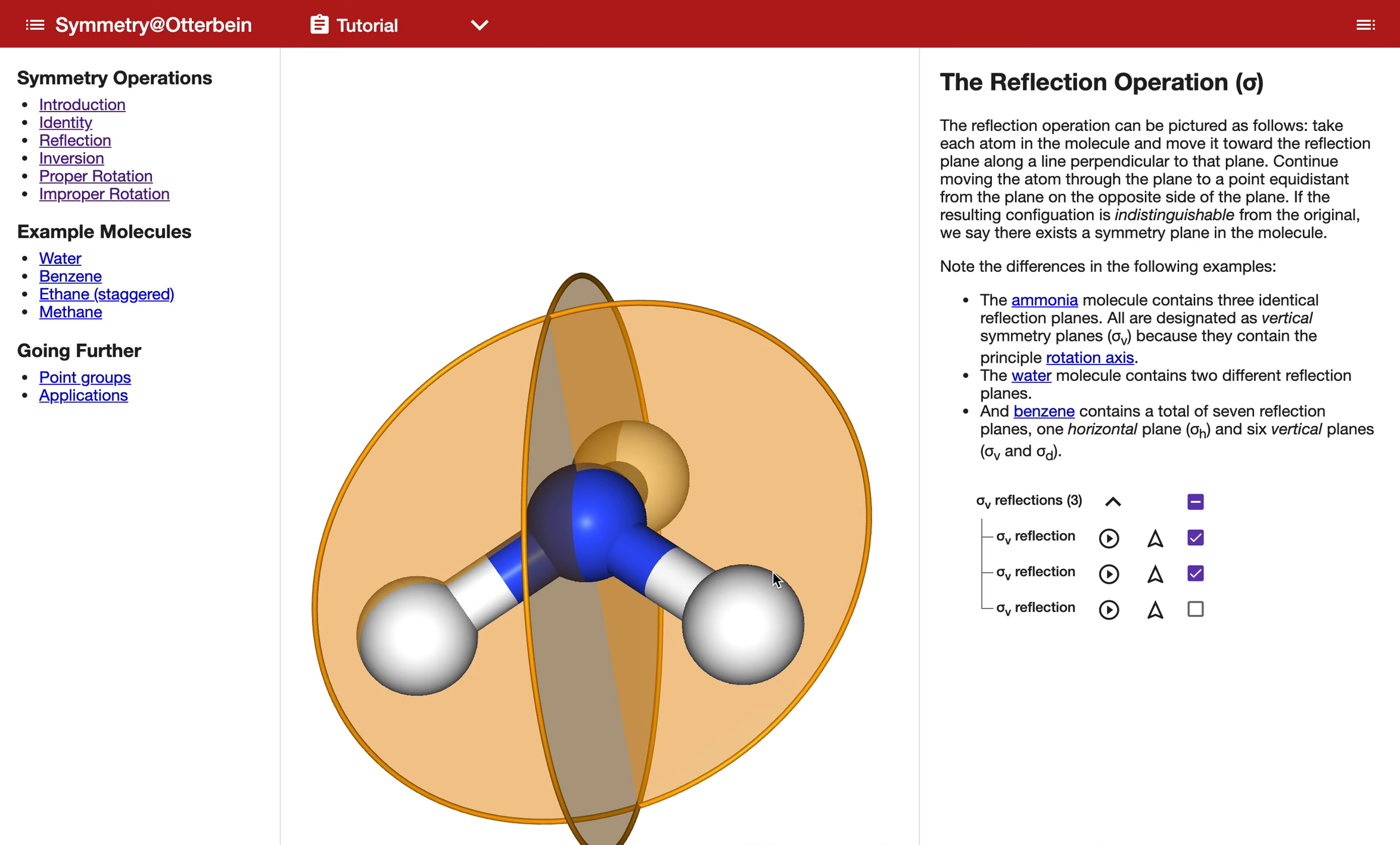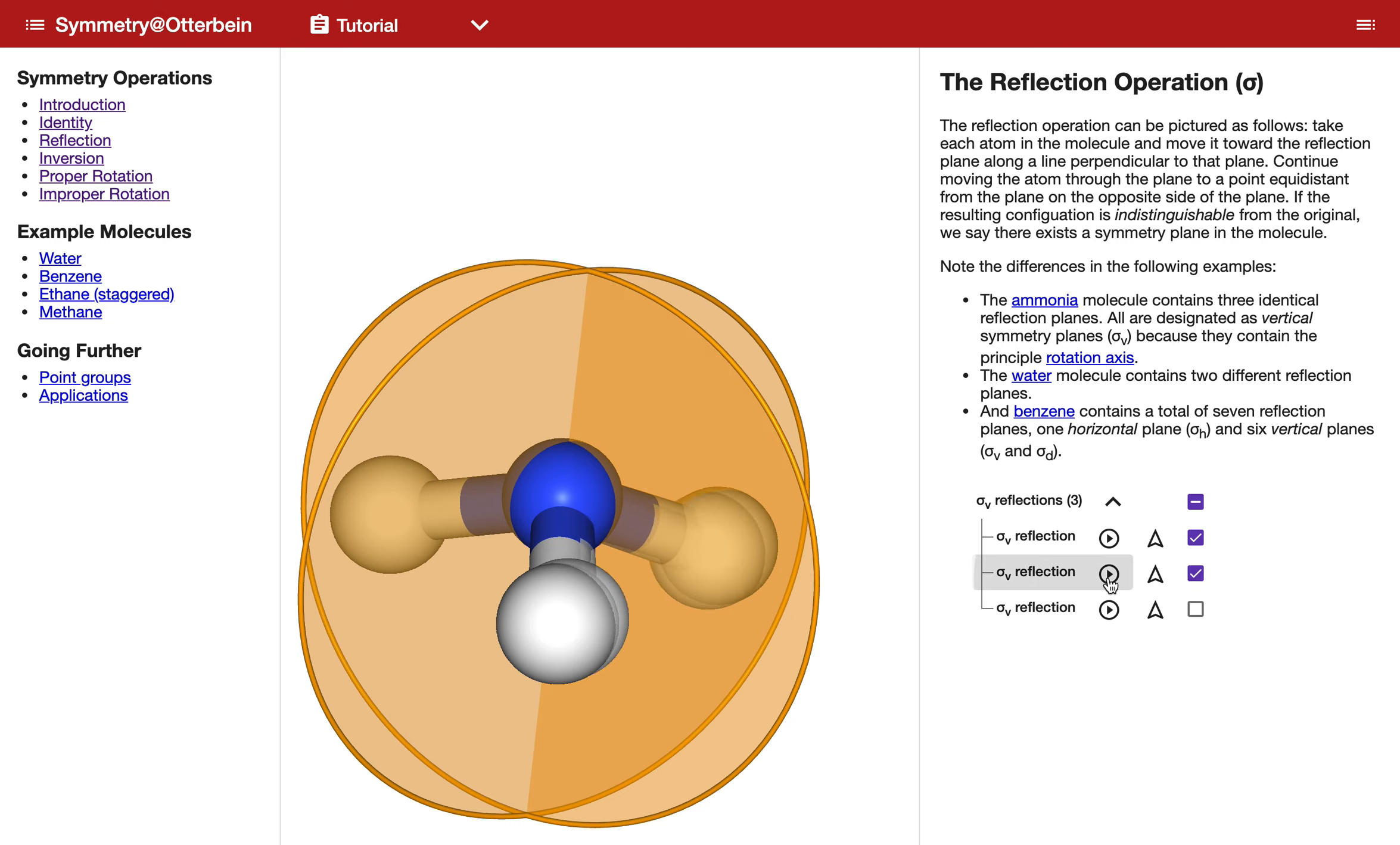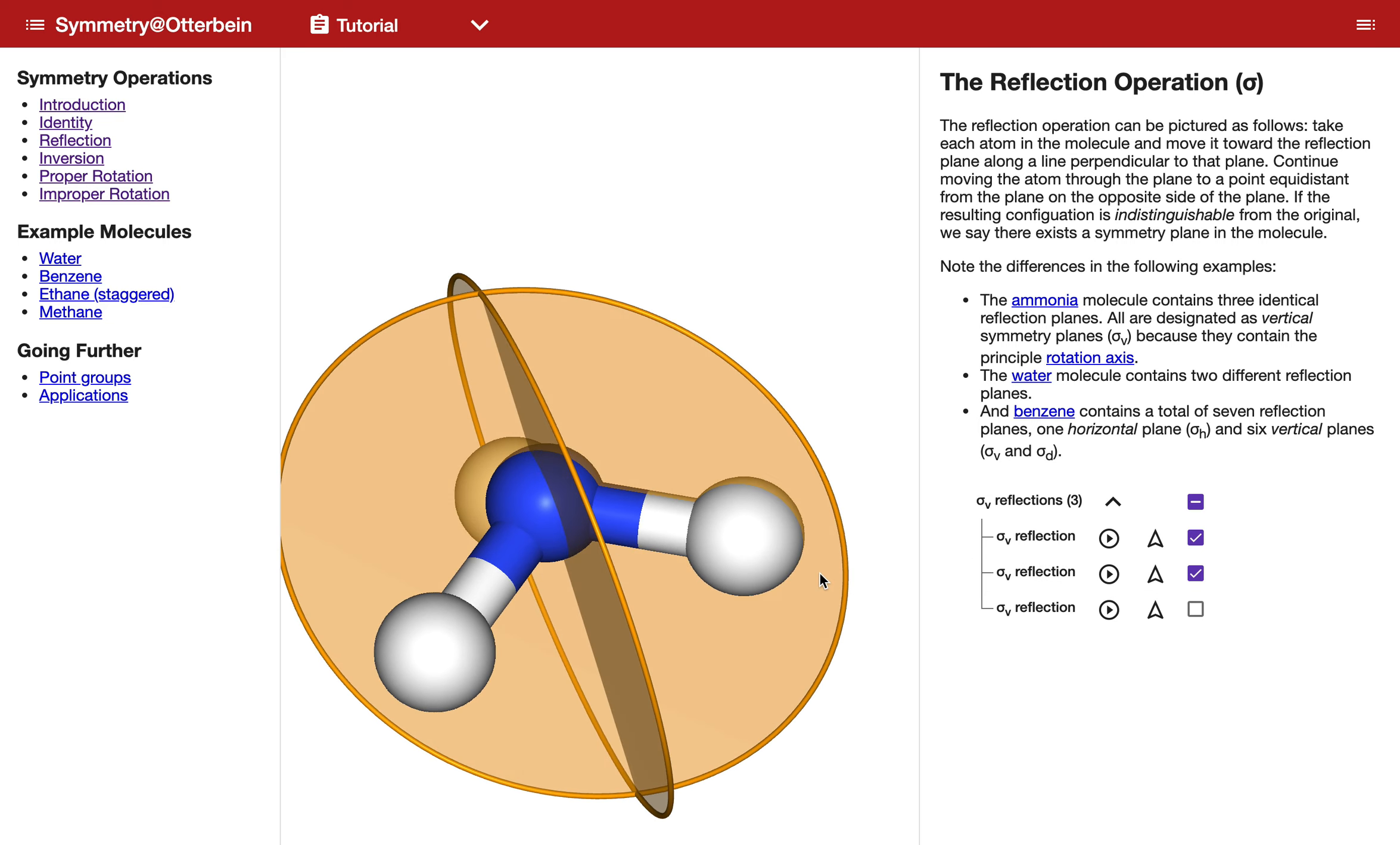I could look at a different plane, and you can see that this different plane goes through a different nitrogen-hydrogen bond. So if I were to click on its action—I'll rotate this a little bit more—